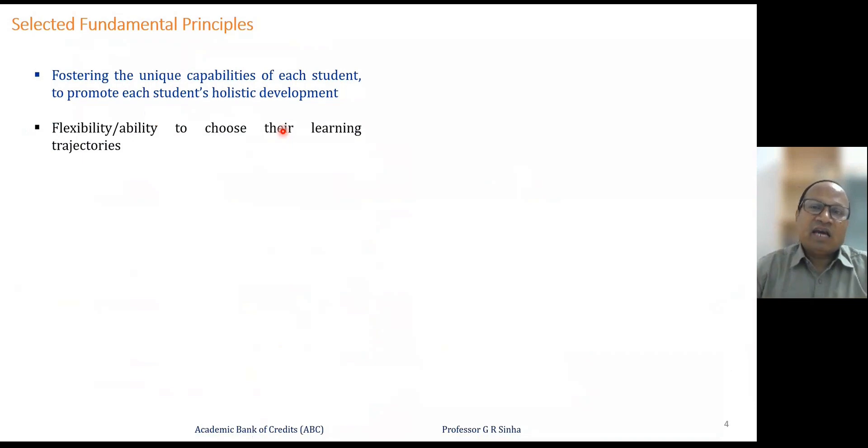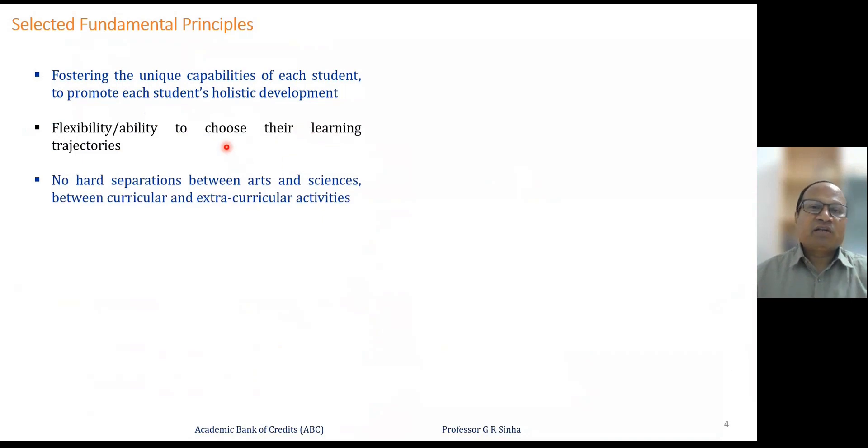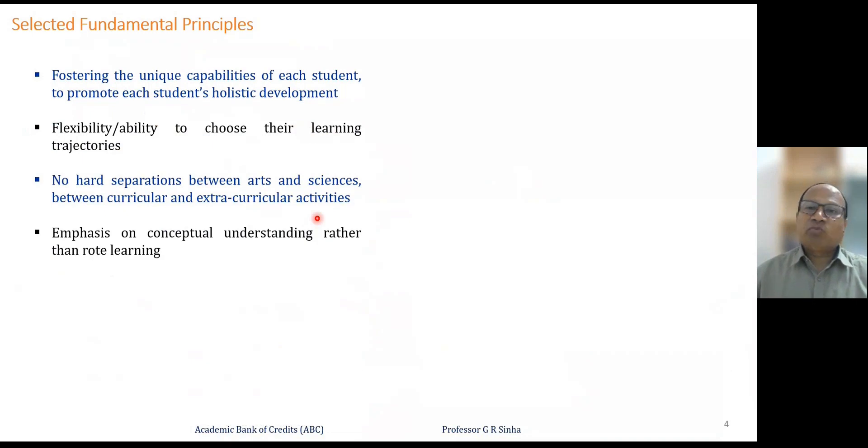The selected fundamental principles of NEP 2020 include fostering the unique capabilities of each student and promoting holistic development. The goal is to allow everyone to exhibit their hidden potential and unique capability. Holistic development includes not only academic knowledge but also appropriate skill sets required in industry and the values, traditions, and cultures of India. Students have flexibility to choose their own learning trajectories, and there is no hard separation between disciplines — multidisciplinary and interdisciplinary education is promoted.